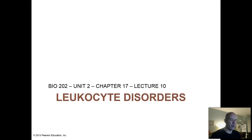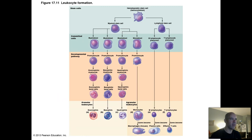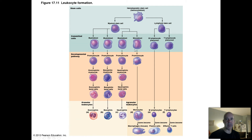Welcome back. We're going to talk about some leukocyte disorders here for our tenth lecture. This diagram from your textbook is illustrating the process of hematopoiesis that takes place in your red bone marrow, focusing in on your different types of leukocytes or white blood cells.